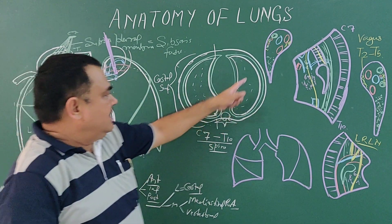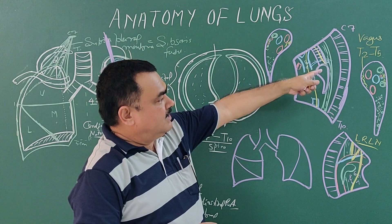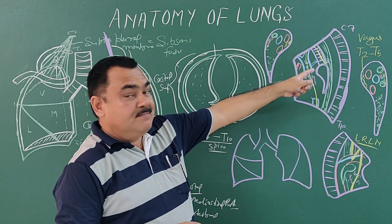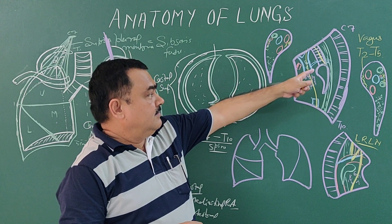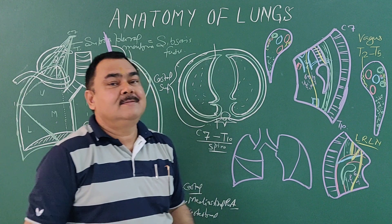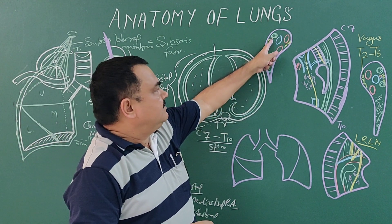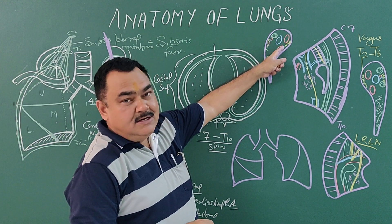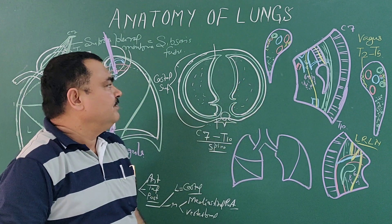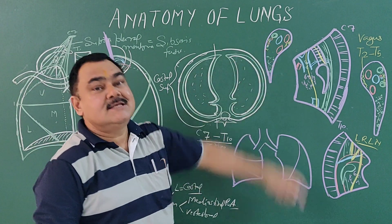Nerve supply: the vagus and sympathetic fibers from T2 to T5 segments. The artery is supplied by the bronchial artery, which gives supply to the tissue, and venous drainage is by the bronchial veins.